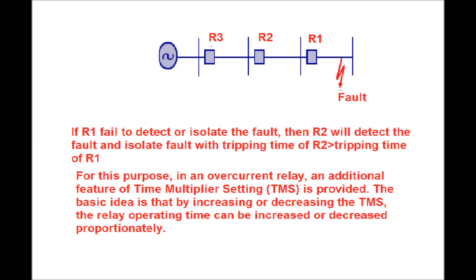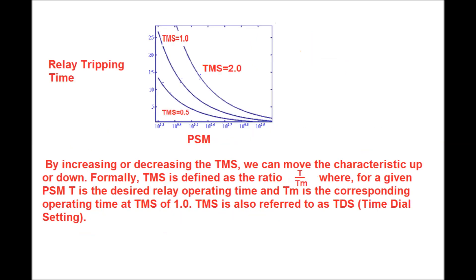For this purpose, in an overcurrent relay an additional feature called Time Multiplier Setting or TMS is provided. The basic idea is that by increasing or decreasing TMS, the relay operating time can be increased or decreased. In the figure, by increasing or decreasing TMS, we can move the characteristics up or down.